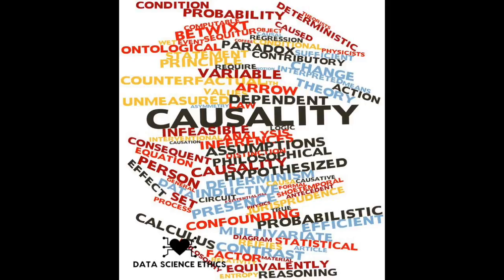There's another dark side to proxy variables, and that is confounding variables. Confounding variables are highly correlated to the variable being predicted, but correlation does not mean causation. Usually, both are outcomes from the same underlying cause, or lurking variable.